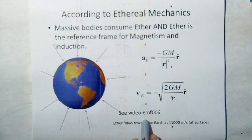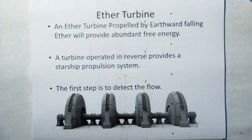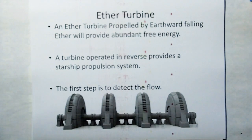If you want to see more about this, you can go to the foundation series video EMF006. Therefore, an ether turbine propelled by earthward falling ether will provide abundant free energy.